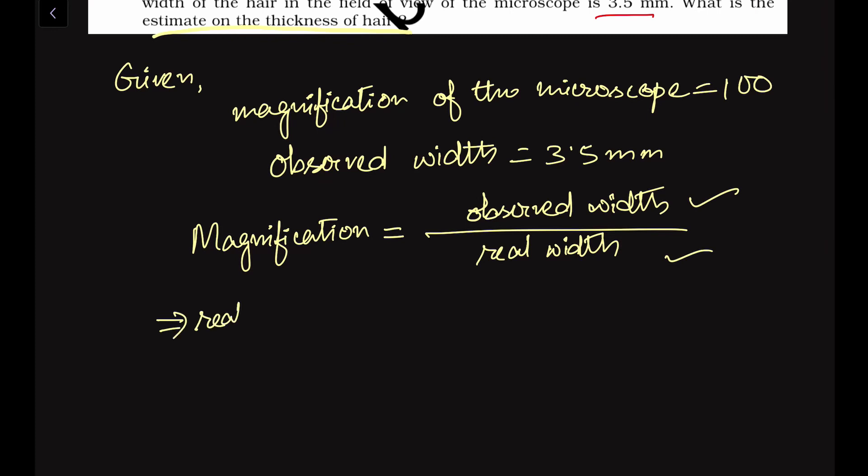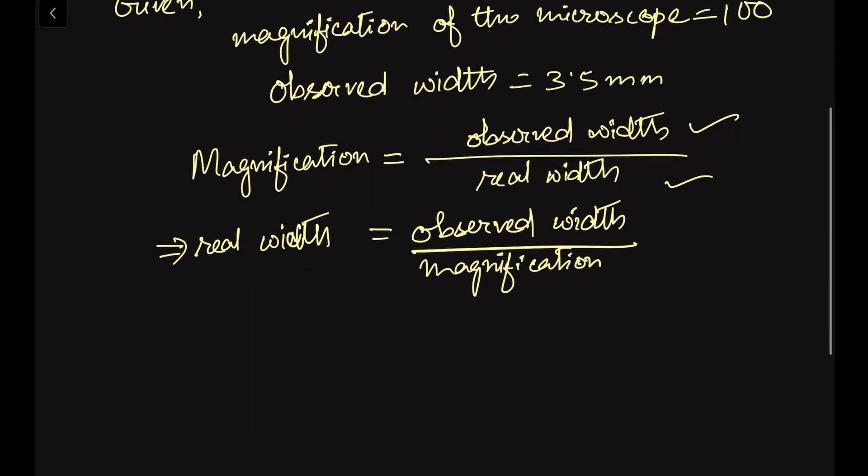Real width of the human hair we can find out using this formula: real width is equal to observed width divided by the magnification or the magnification factor.